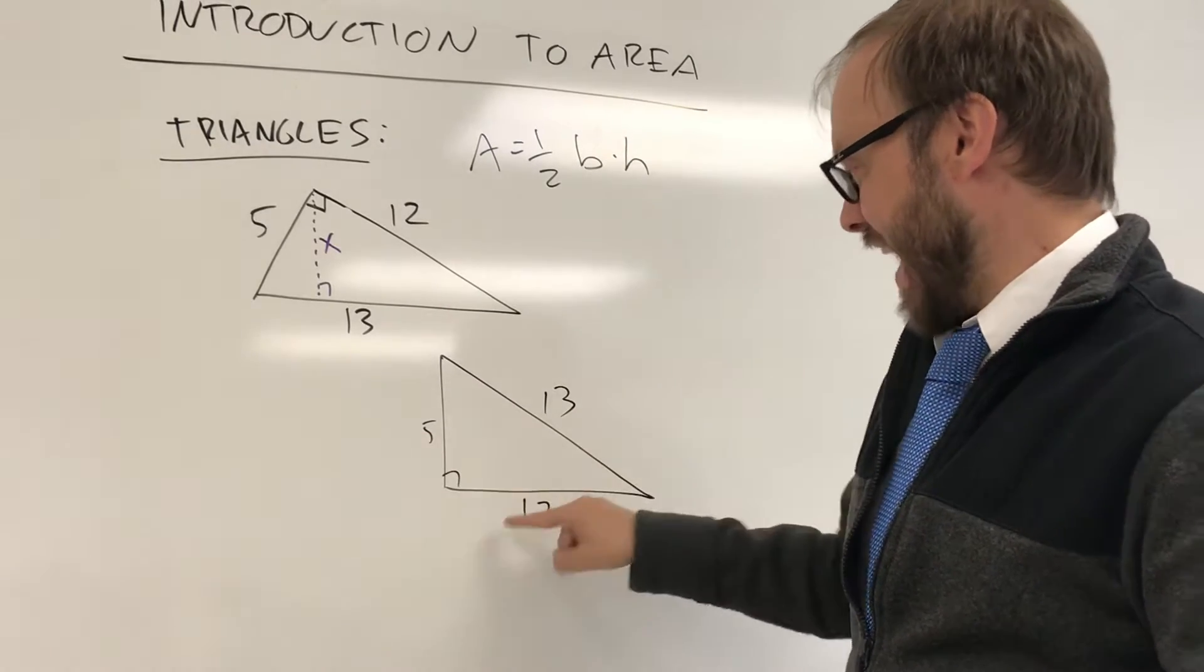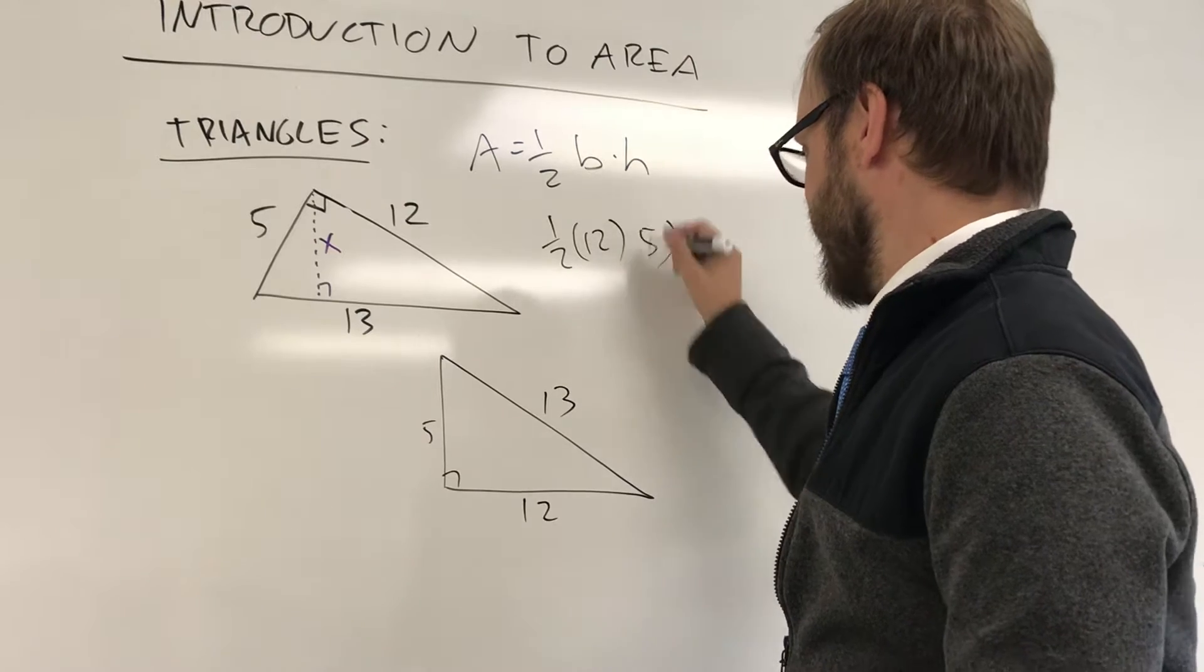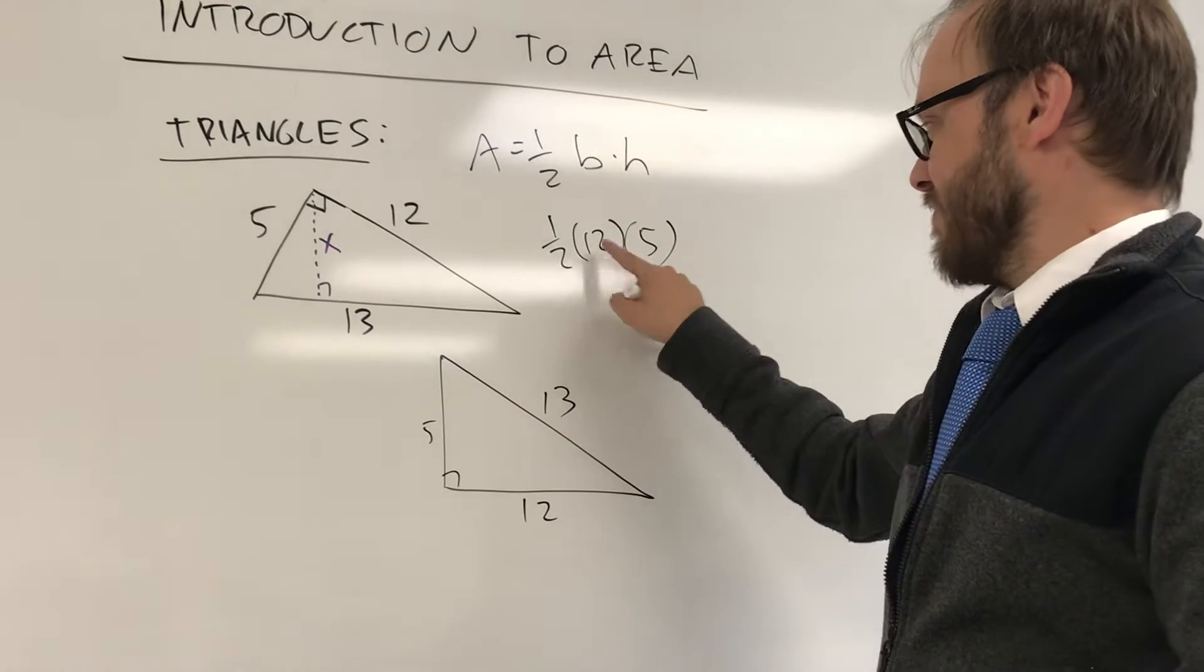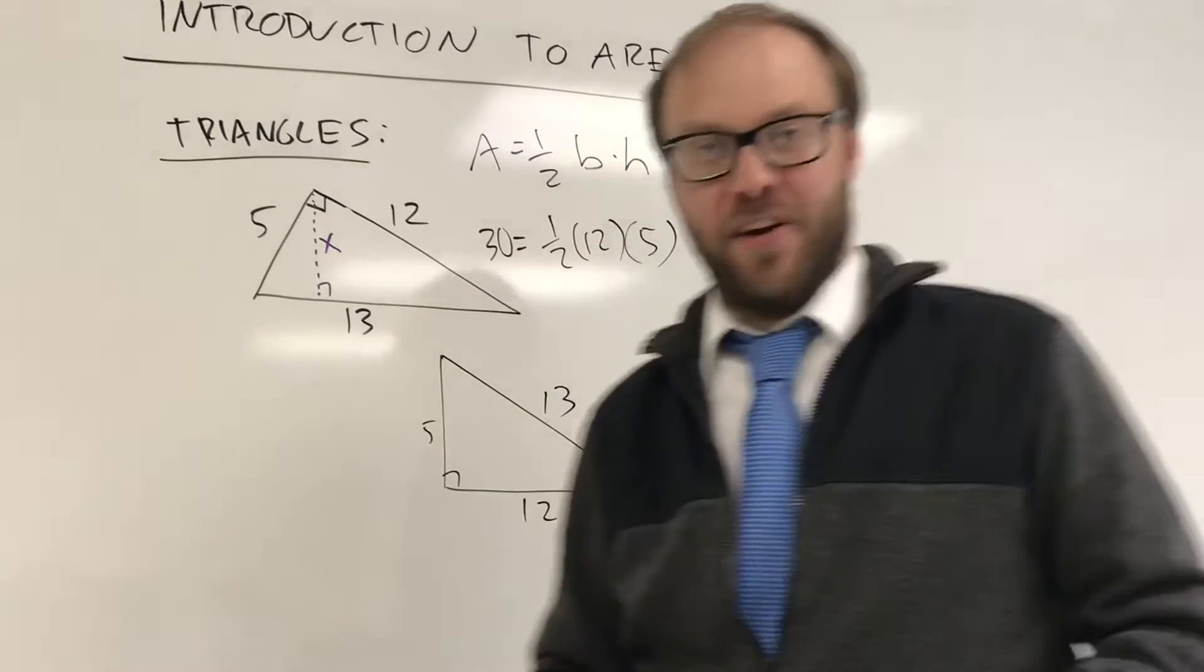So the area of this triangle is half the base, which is 12, times the height, which is 5. So half of 12 is 6, 6 times 5 is 30. That's the area of the triangle.